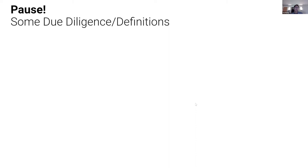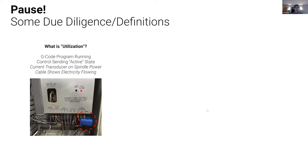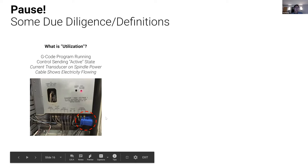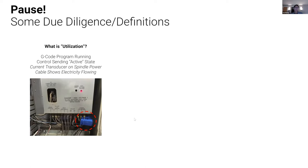Before we get into that, I want to do some due diligence. Our insights and numbers have started to get picked up by various organizations who are using them for their forecasts and economic analysis. So it's important to clarify our definitions. What is utilization? When we go onto a machine tool, we can see when a G-code program is running, when the control is sending an active state, and for older machines we can attach a current transducer to track when there's electricity flowing. Utilization is when any of these three conditions are true.